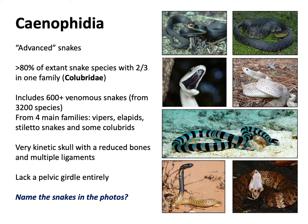One characteristic of caenophidian snakes is their skull is very kinetic — lacking many bones, having lots of ligaments, and able to stretch to accommodate larger prey. They can dislocate their jaw from their maxilla, allowing them to swallow large prey. And there's no remnant of a pelvic girdle in these animals.